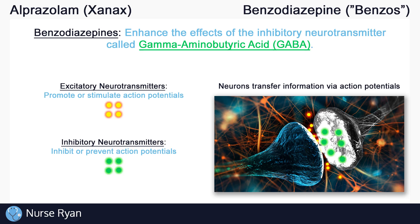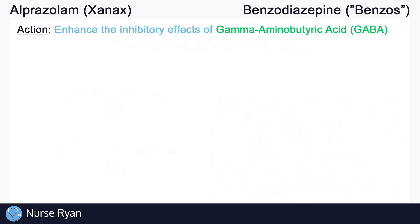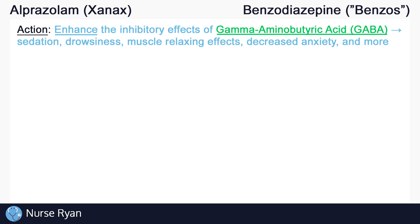So benzodiazepines, like alprazolam, work by enhancing GABA. Alprazolam enhances the main downer of the nervous system, which results in all sorts of inhibitory effects throughout the body, including sedation, drowsiness, decreased anxiety, muscle relaxing effects, and more. This is why benzodiazepines are considered central nervous system depressants.